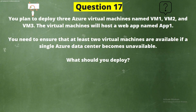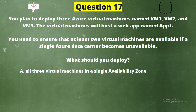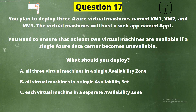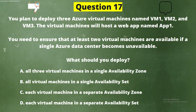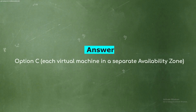Question 17. You plan to deploy three Azure virtual machines named VM1, VM2, and VM3. The virtual machines will host a web app named App1. You need to ensure that at least two virtual machines are available if a single Azure data center becomes unavailable. What should you deploy? The options are: A) all three VMs in a single availability zone, B) all VMs in a single availability set, C) each VM in a separate availability zone, D) each VM in a separate availability set. The correct answer is Option C — each virtual machine in a separate availability zone.